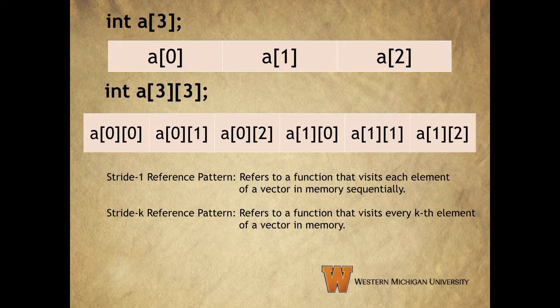Now, let's take a moment to talk about how C allocates memory for arrays, and what stride 1 reference pattern mentioned in the last slide means. When you declare an array, the memory is allocated in order of index. So, if you declare an array of type int with a size of 3, the array will be stored in memory as 3 ints in a row.